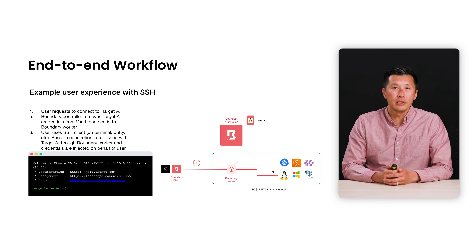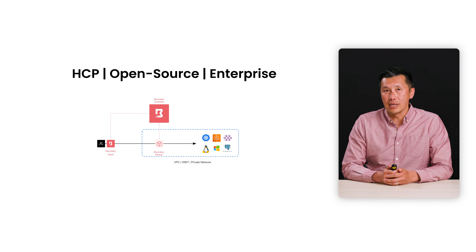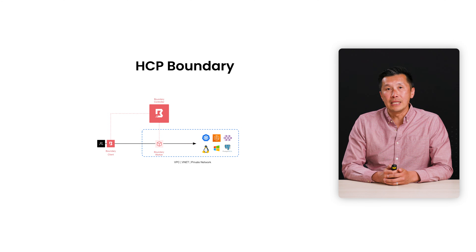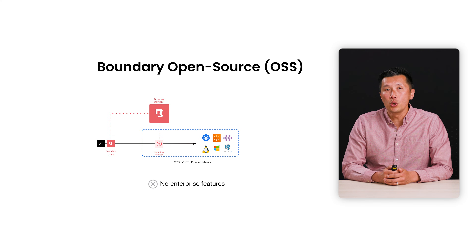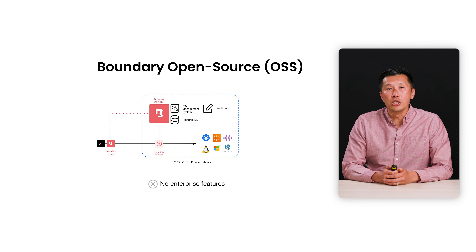There's one last thing I wanted to touch on. Boundary offers two deployment models: a cloud-managed and a self-managed model. HCP Boundary is the cloud-managed solution where the Boundary controller is managed for you in HashiCorp's own infrastructure. This makes it very simple and easy to deploy, and best practices, backups, and upgrades are all done for you. For self-managed solutions, there are two options: Open Source Boundary and Boundary Enterprise. The Open Source Boundary version allows customers to deploy the Boundary controllers into their own infrastructure.